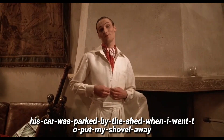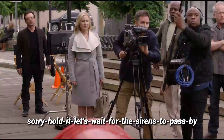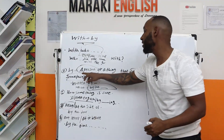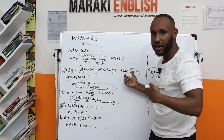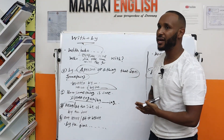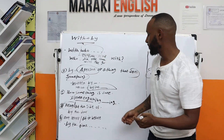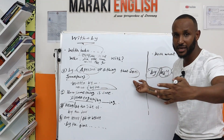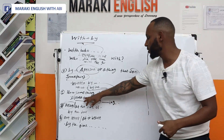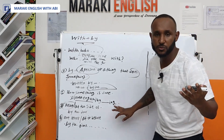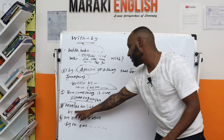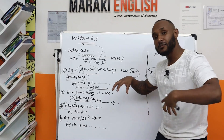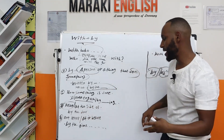His car was parked by the shed when I went to put my shovel away. Let's wait for the sirens to pass by. So we can use 'by' to say a person or thing that does something; how the action is done — 'it was written by somebody'; 'I was arrested by the police.' You see that they are responsible for the action. The second meaning: 'I learned English by watching movies' — that's the method I used. The third is a preposition of place — something is near it or at the side of it.